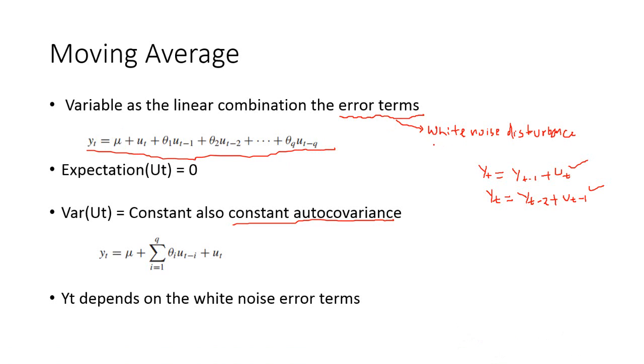It is also known as white noise disturbances. So, ut minus 1 is the disturbance term at lag 1, then disturbance term at lag 2, disturbance term up to lag q. So, this is a qth order moving average model.